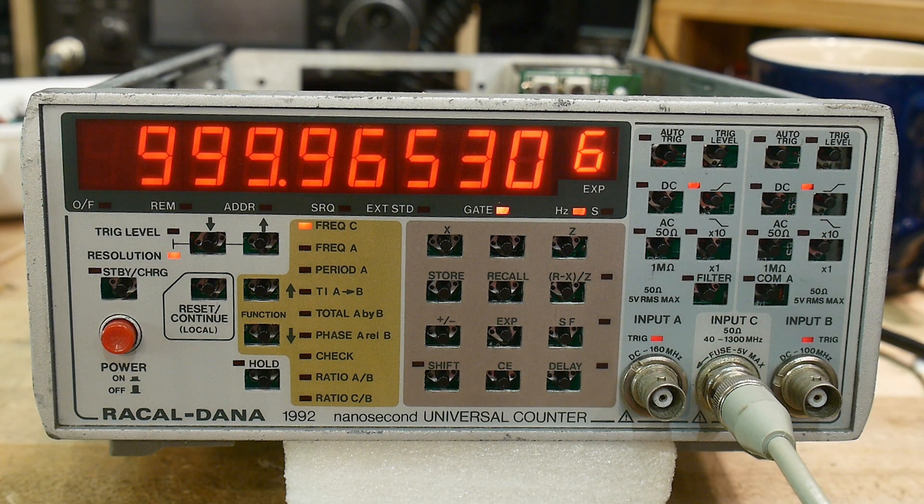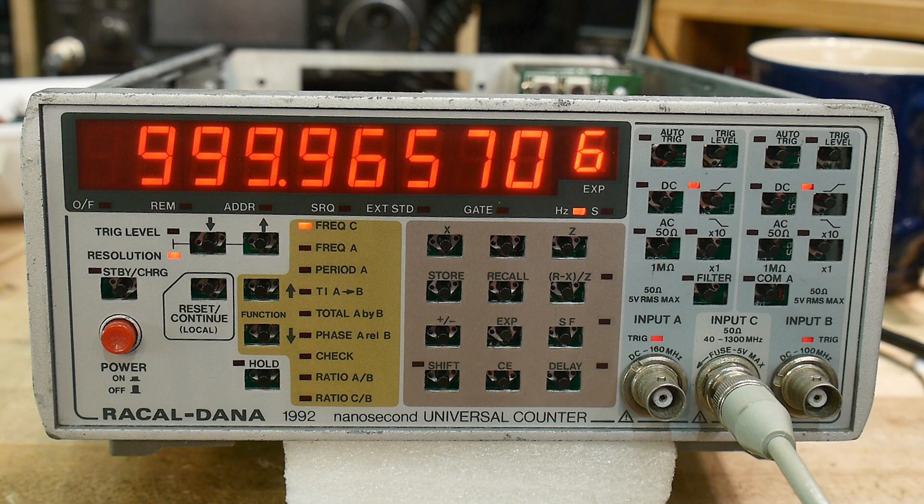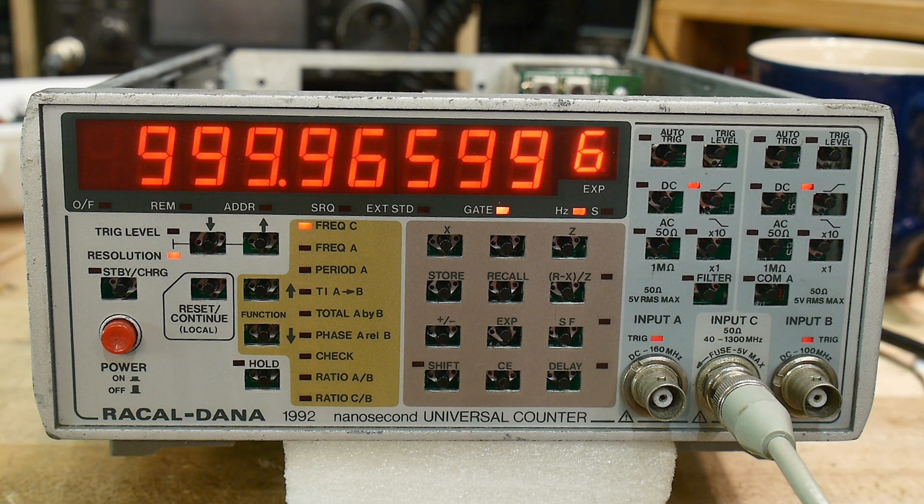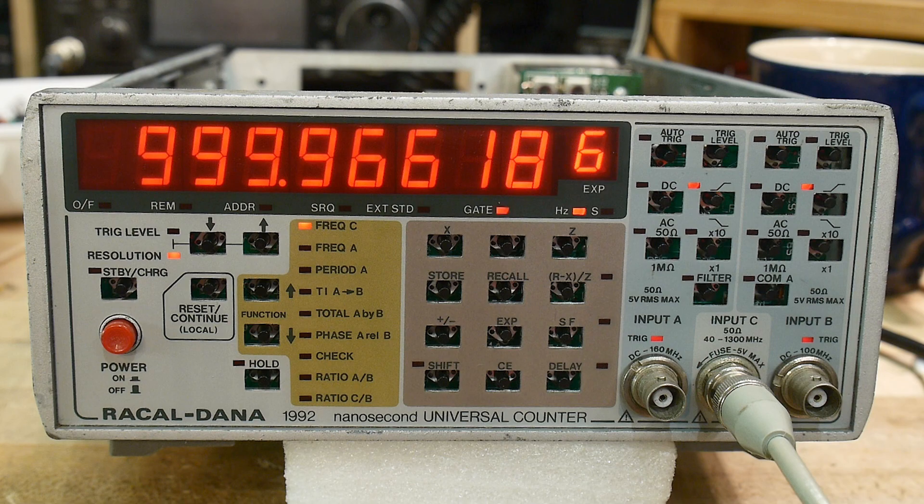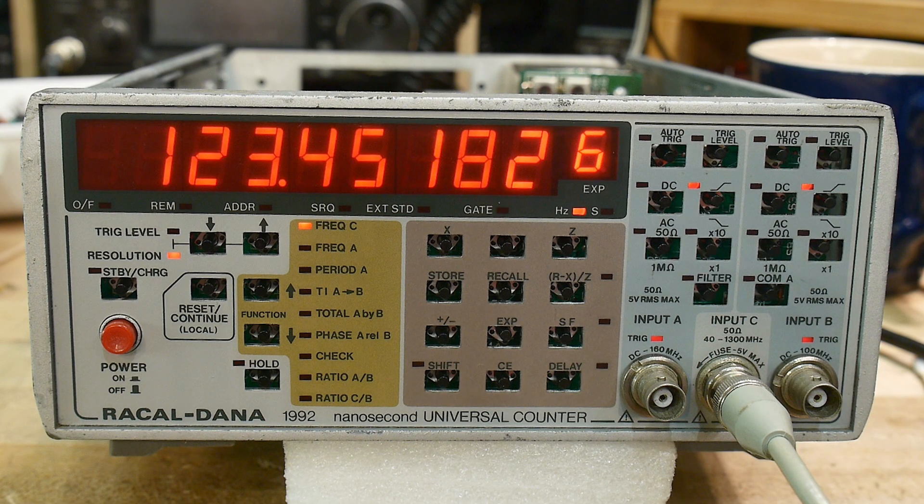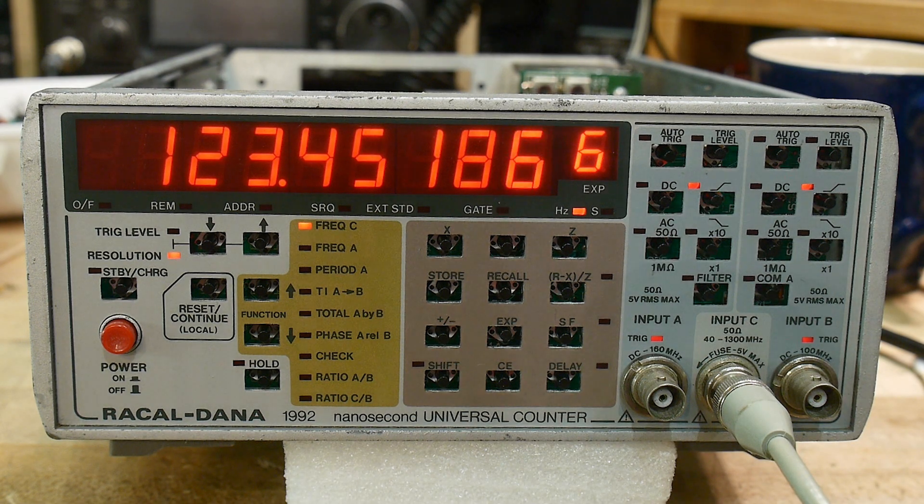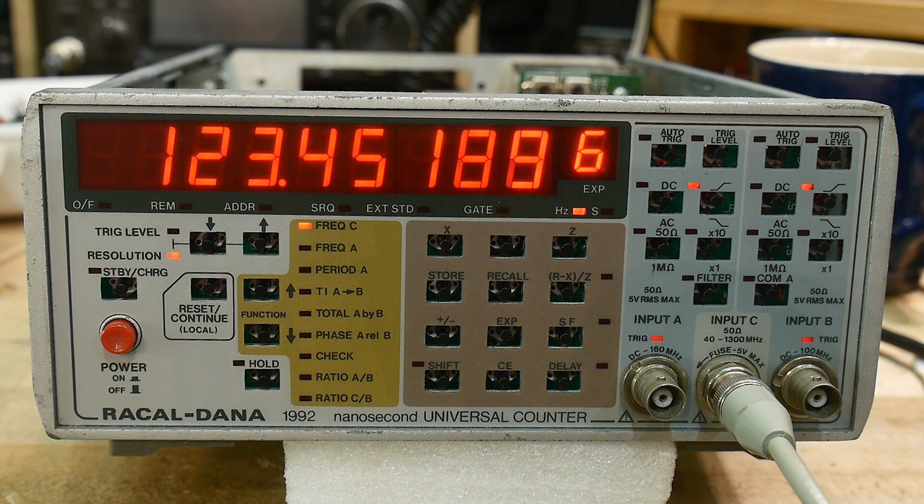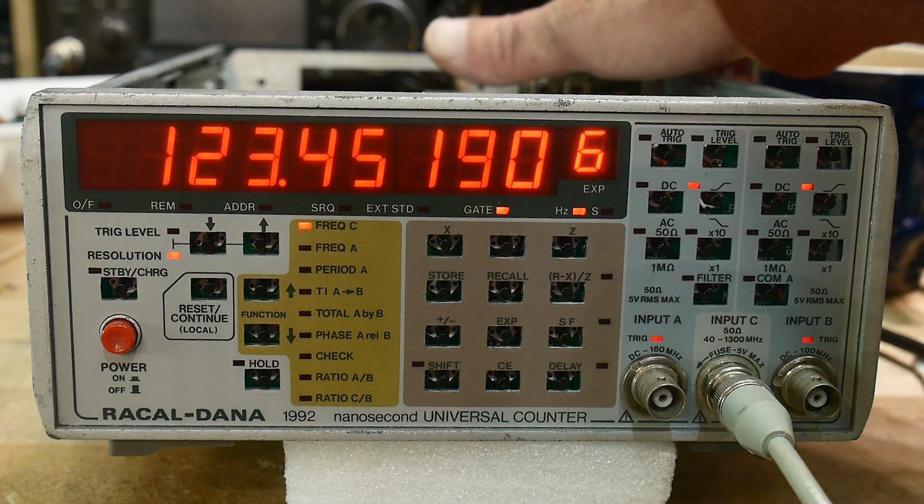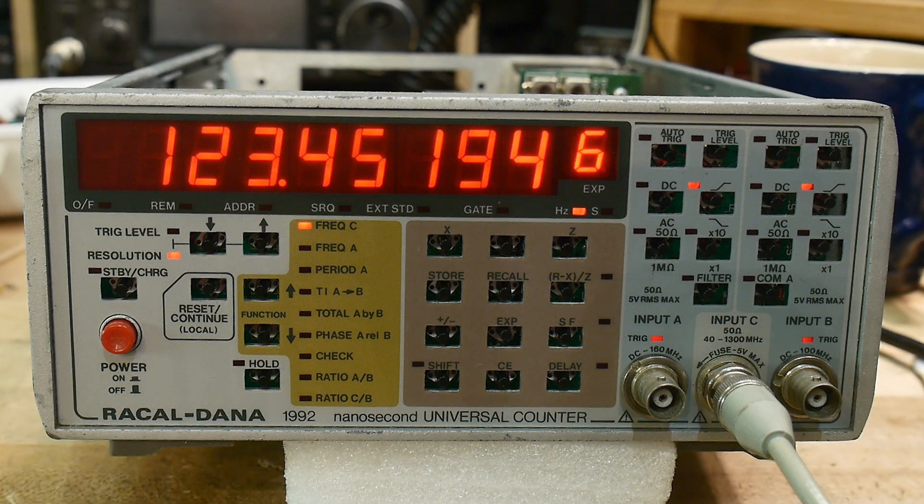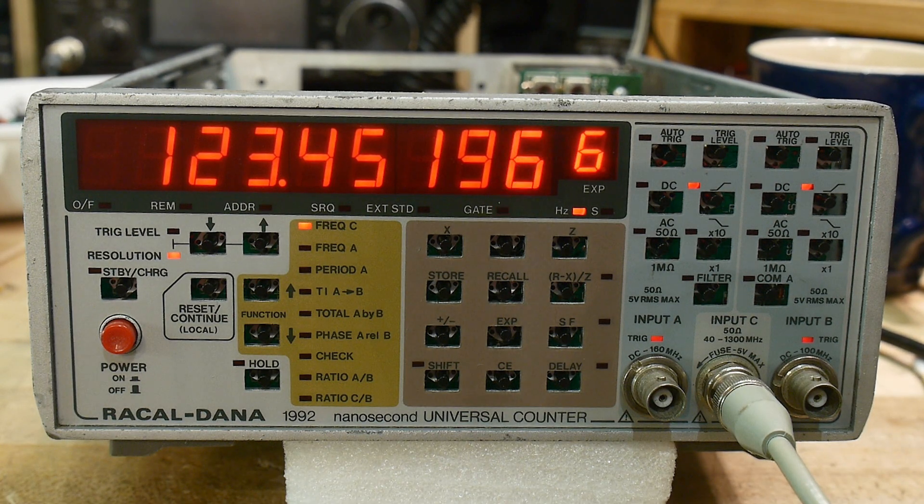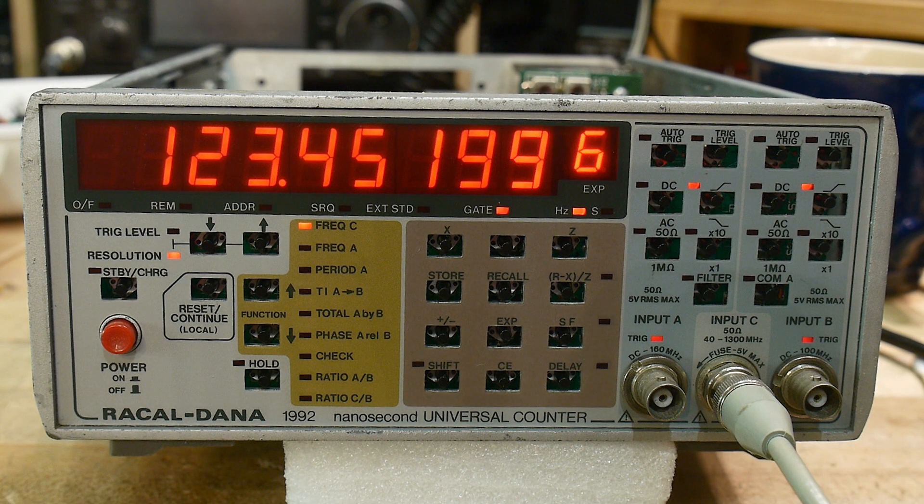One gigahertz. Let's try something fun: one, two, three point four, five, six megahertz. There we go, four, five, zero. So we'll have to calibrate this thing after the oven warms up for a while. I'm sure it'll be nice and stable. It's looking good.